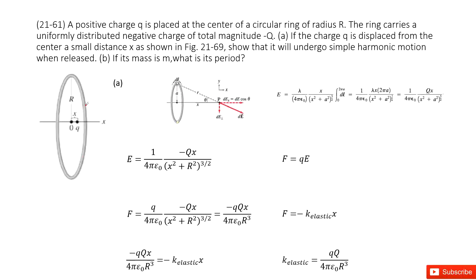Let's look at this system. We have a positive charge q located at a position along the x-axis, at a small distance x from the origin point O. We also have a ring with radius R located at the origin O, and this ring carries a uniformly distributed negative charge with total charge negative Q. The question asks: can you prove that when released at this location, the small charge q will undergo simple harmonic motion?